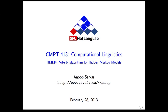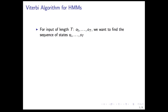Welcome to the fourth module in the ongoing saga of hidden Markov models. This time we're going to look at a dynamic programming algorithm called the Viterbi algorithm. As we saw last time, we wanted to solve the problem of a HMM as a parser — given an input, we want to find the most likely sequence of states, the sequence that has the highest probability according to the HMM.